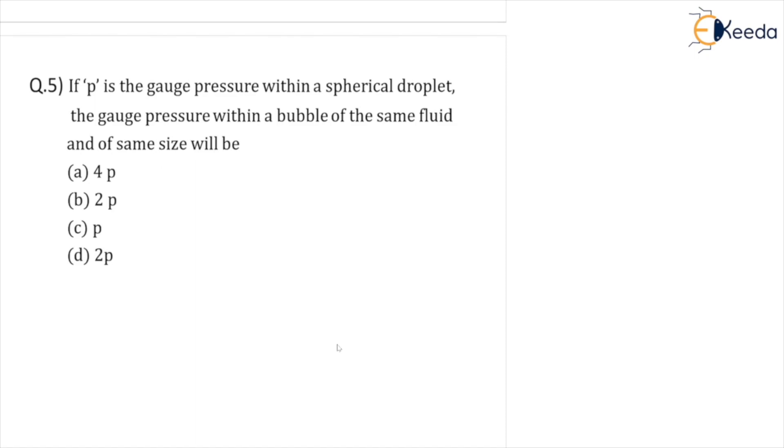Let me explain the question. If p is the gauge pressure, as we know in fluid mechanics we always talk about gauge pressure. Gauge pressure is nothing but the pressure inside the droplet minus the atmospheric pressure. That is the gauge pressure within a spherical droplet.